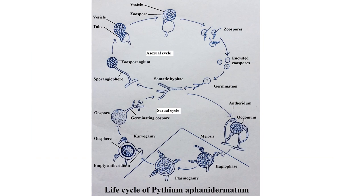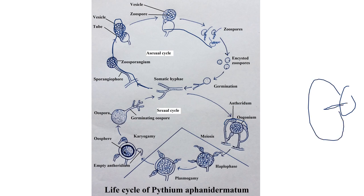In summary of the life cycle: sporangia are produced, and the formation of the vesicle is the special feature where zoospores form and are released. Sexual reproduction is by gametangial contact type where male and female gametes come in contact. A fertilization tube is formed, gametes move to the oogonium, and an oospore is formed with a thick wall. The oospore can germinate directly under favorable environmental conditions and the life cycle continues.